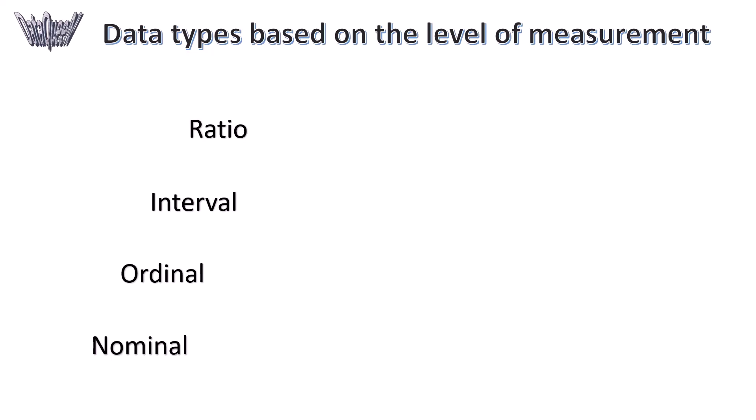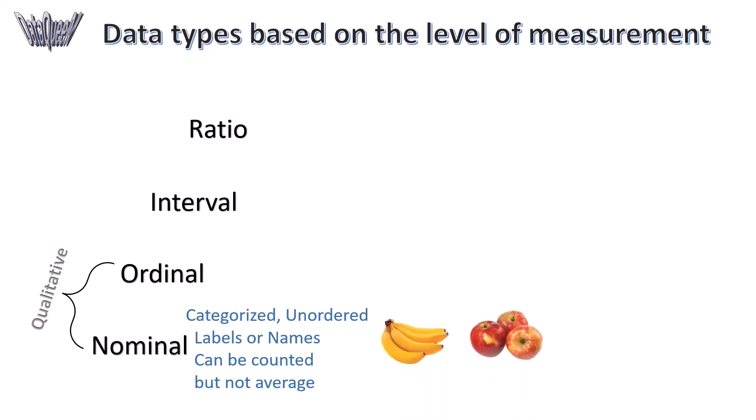Nominal and Ordinal are Qualitative Data. Nominal data type represents data that can be categorized and it is inherently unordered. Data are labels or names used to identify an attribute of the element. Nominal data can be counted and used to calculate percentages, but you can't take the average of nominal data. For example, fruit can be classified into apples, bananas, oranges, and so on.